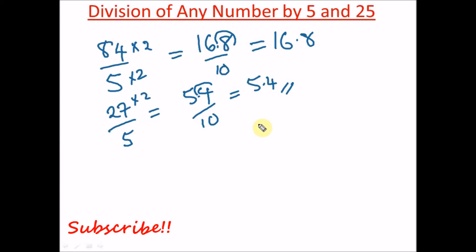Now for 25, if you want to divide something by 25, let's say we have 73 divided by 25. We multiply this by 4, and also multiply 25 by 4. When you multiply 25 by 4, that gives us 100, and 73 times 4 gives us 292.